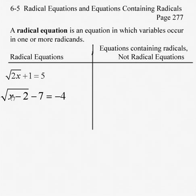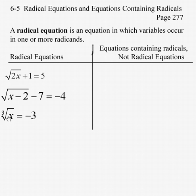The square root of x minus 2, that algebraic expression, then minus 7 equals negative 4 is a radical equation — we've got the x minus 2 as part of the radicand. Also the cube root of x equals negative 3 is a radical equation as well.